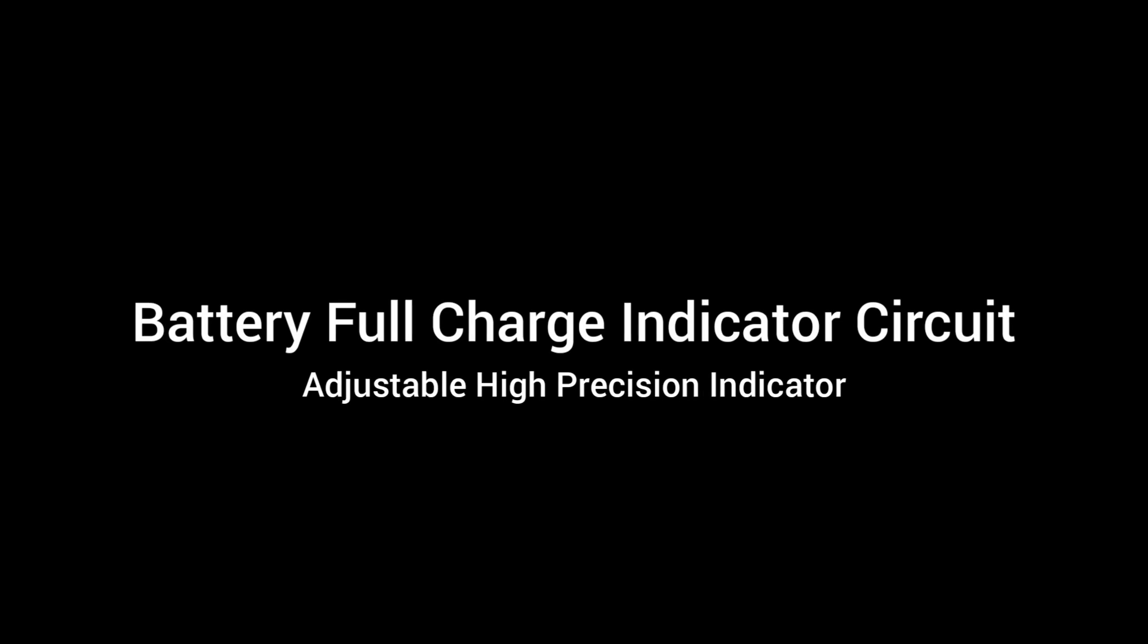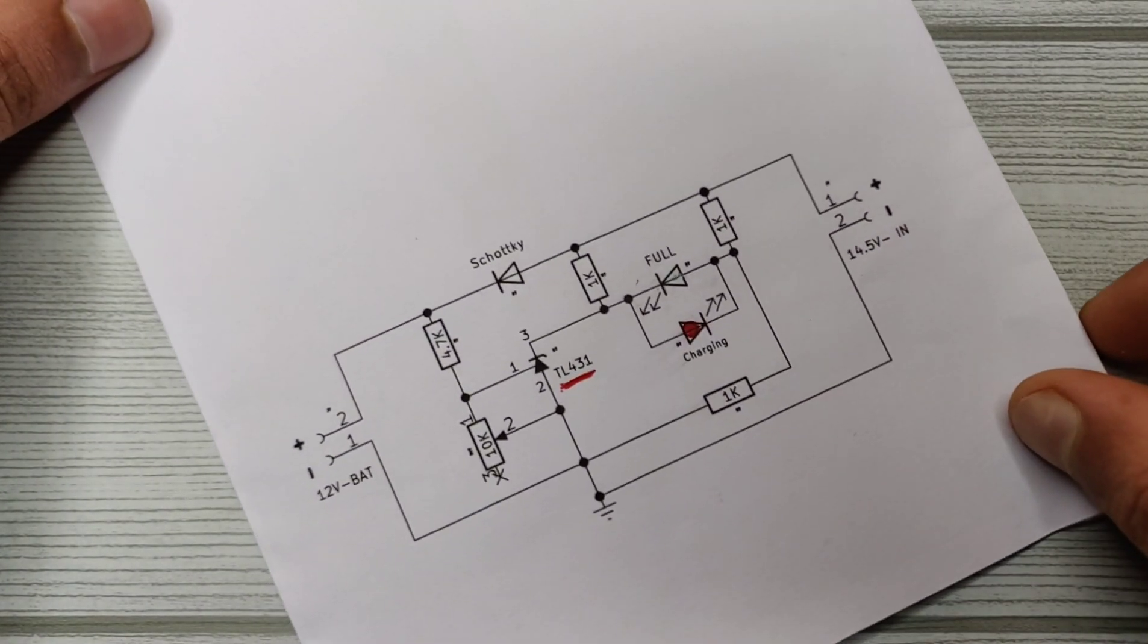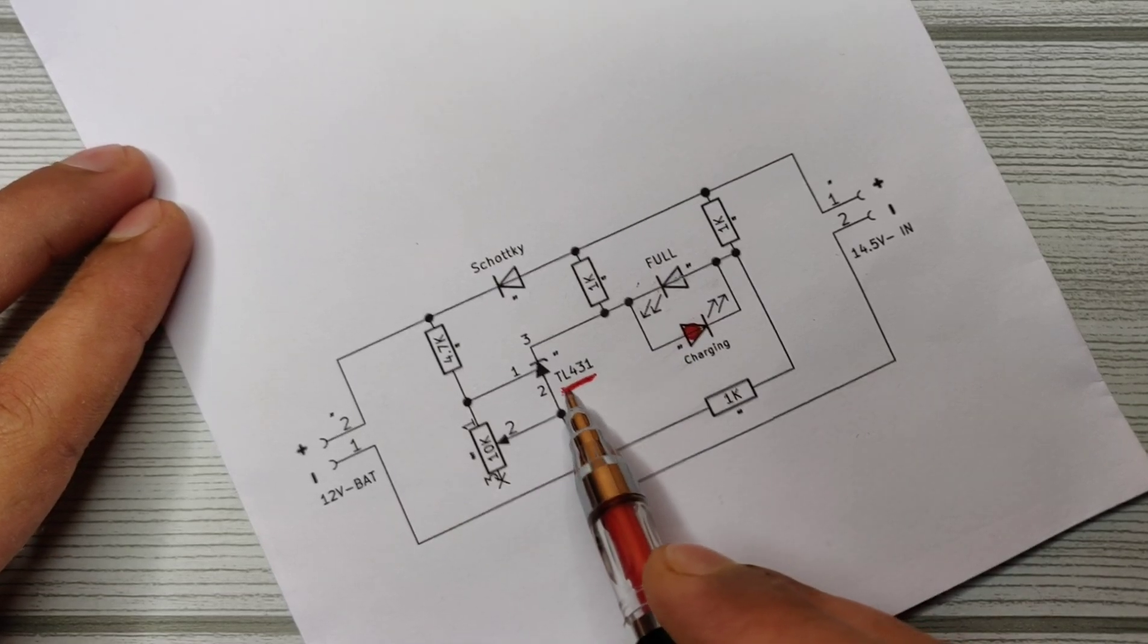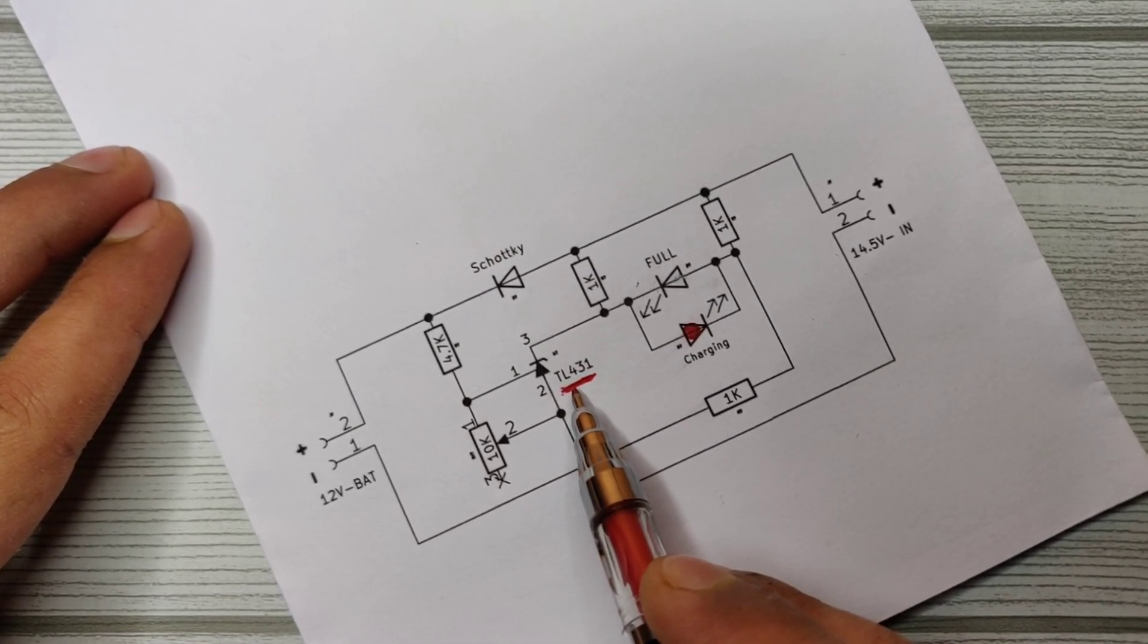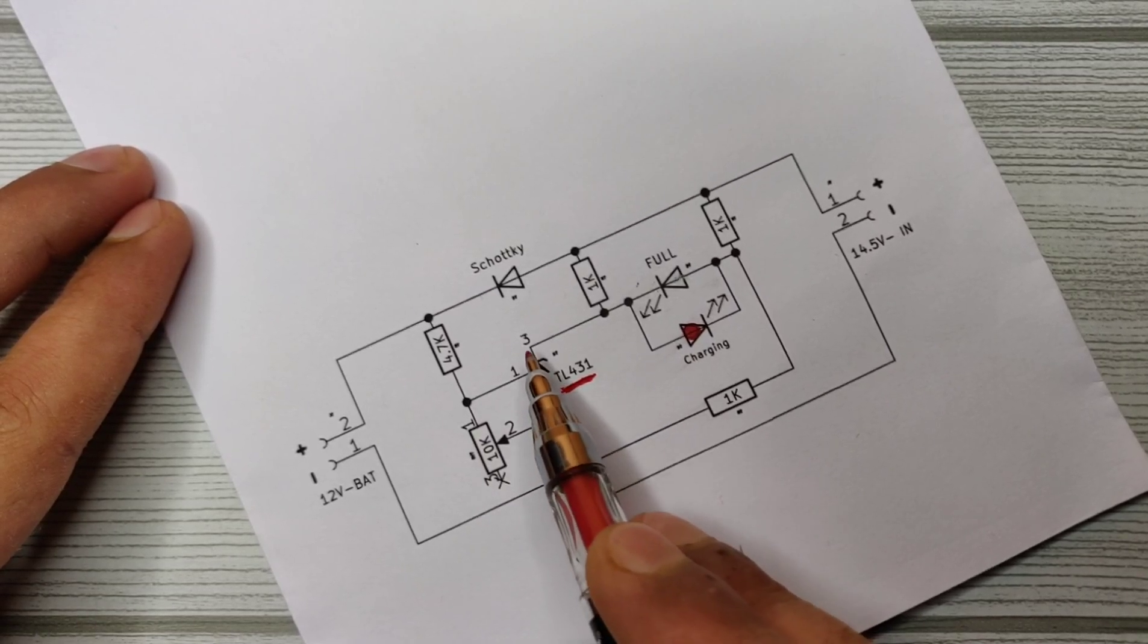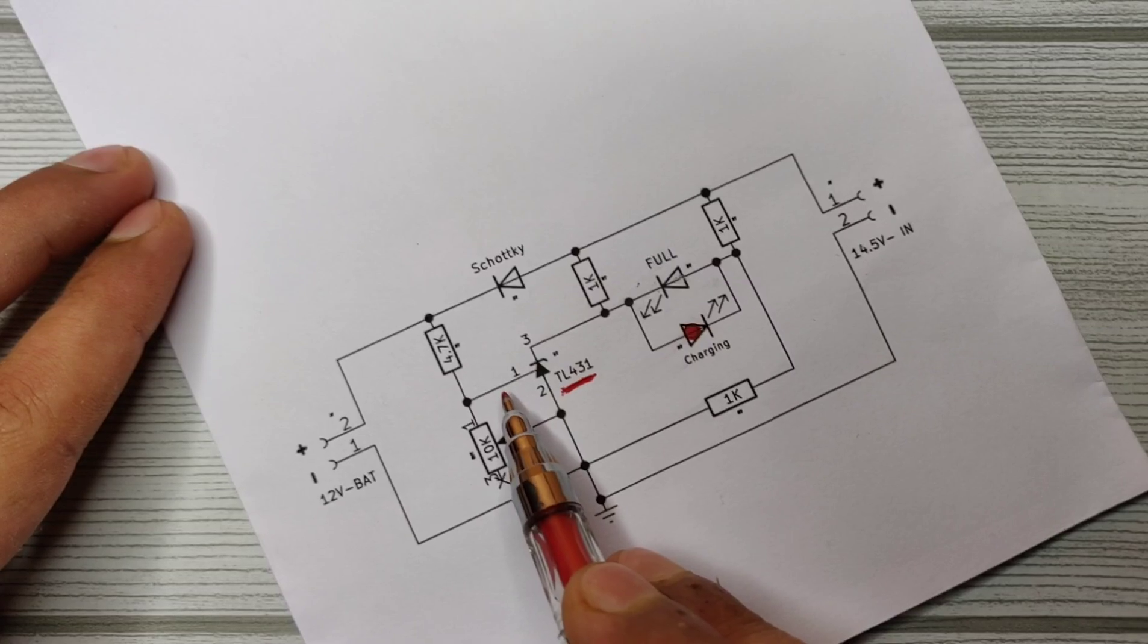Today I will show you how to make an adjustable battery full charge indicator circuit. Let's look at the diagram first to understand how it works. As you can see here, we have a TL431 shunt regulator IC as the main component which actually turns on the negative voltage from pin 2 to pin 3 when reference pin 1 receives the required positive voltage, which is controlled and calibrated by this voltage divider here.